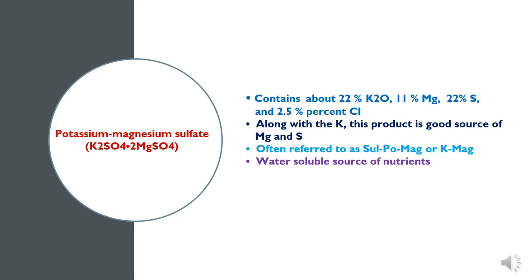The second kind of Potassium fertilizer is Potassium Magnesium Sulphate, which contains 22% Potassium, 11% Magnesium, 22% Sulphur, and 2.5% Chlorine. Along with Potassium, this product is a good source of Magnesium and Sulphur, and is often referred to as a Sulphur-Potassium-Magnesium source. It is a water soluble source of nutrients.